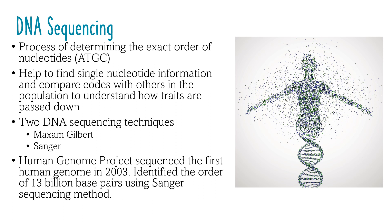Two well-known DNA sequencing techniques are the Maxim-Gilbert and the Sanger method. The Human Genome Project was a worldwide collaborative project that discovered the order of the 3 billion base pairs of the 46 human chromosomes using DNA sequencing techniques. This project was successfully completed in 2003.